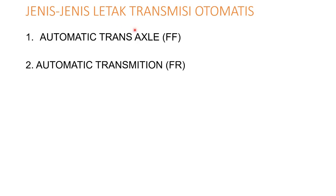Jenis-jenis letak transmisi otomatis ada dua macam. Yang pertama adalah otomatik transaxle, yaitu letaknya di depan atau disingkat dengan FF. Kemudian yang kedua, otomatik transaxle, yaitu yang letaknya di belakang, biasanya disingkat dengan FR. Ini adalah penggerak roda depan, ini adalah penggerak roda belakang.